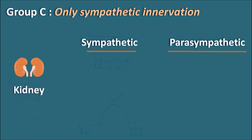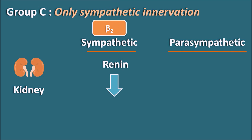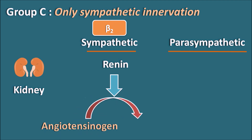The third organ is the kidney. At the kidney, the sympathetic system can act through beta 2 receptors, which increase renin secretion. Renin is an important mediator which converts angiotensinogen to angiotensin 1, which is then converted into angiotensin 2 to produce vasoconstriction. The parasympathetic system has no effect at the kidney.